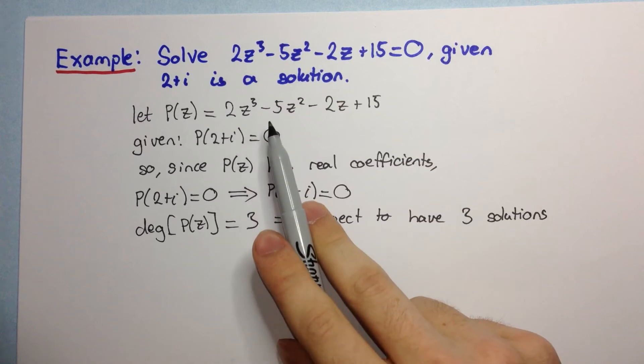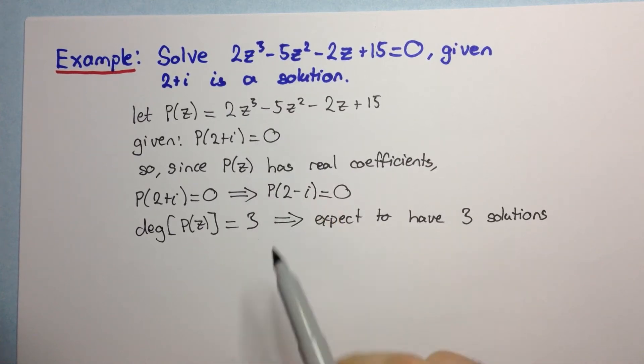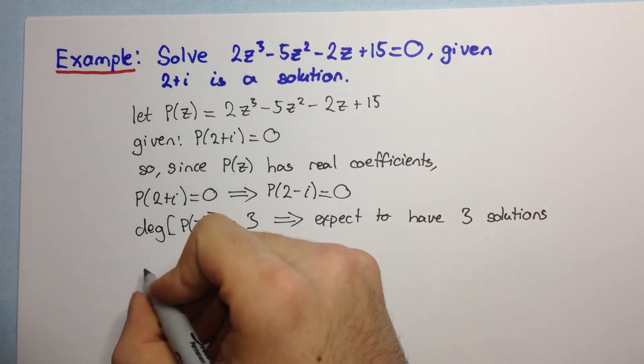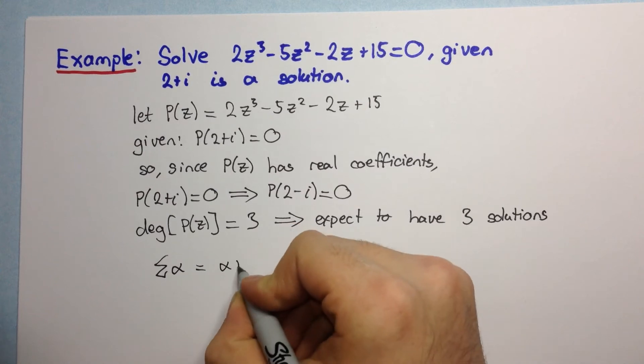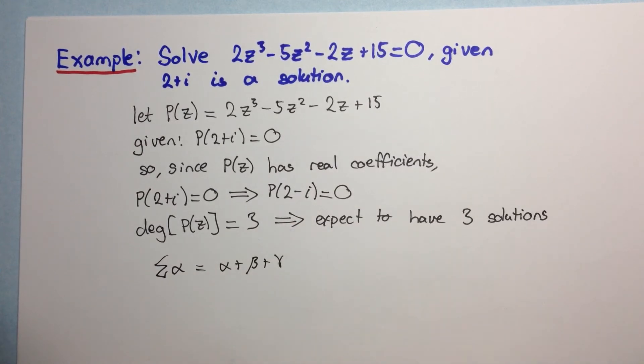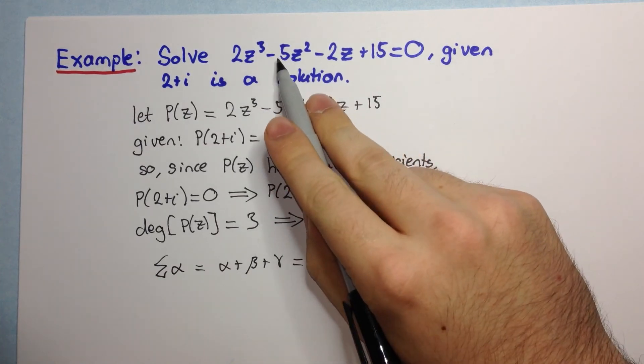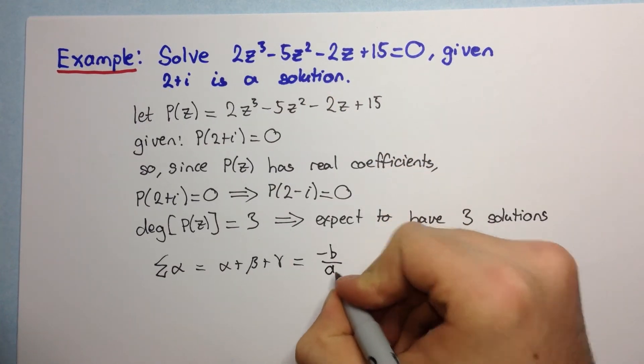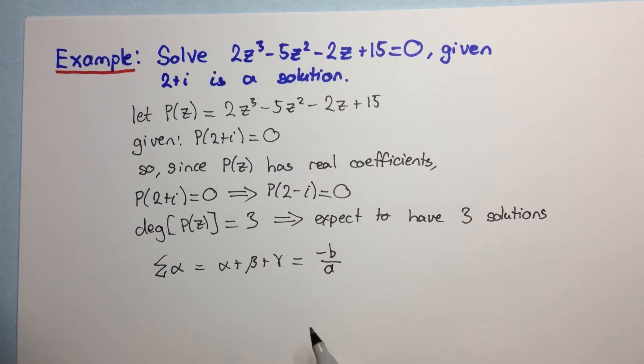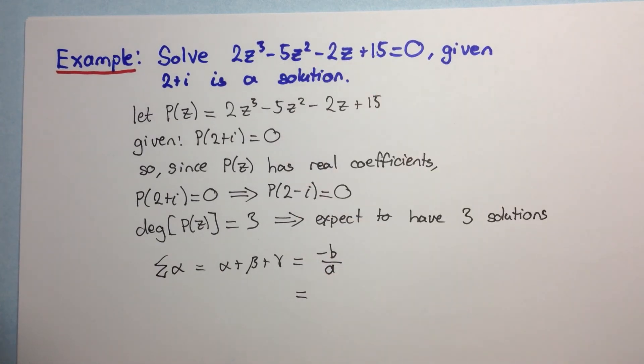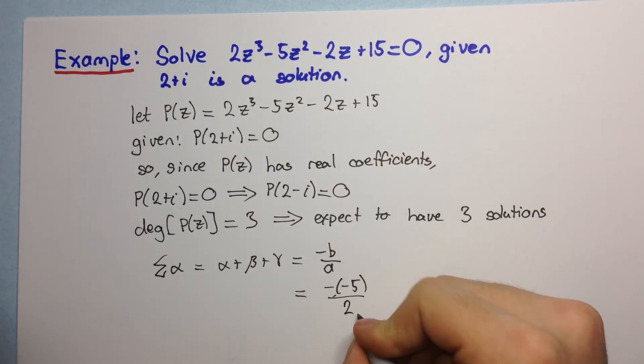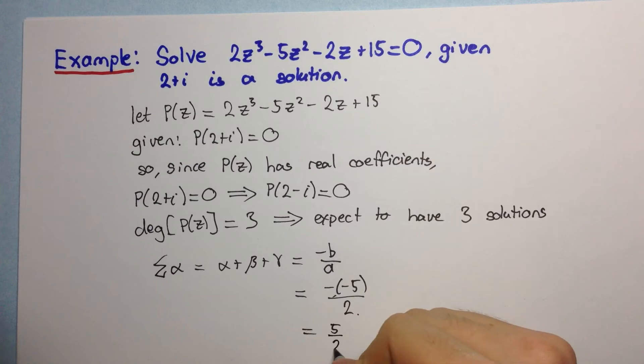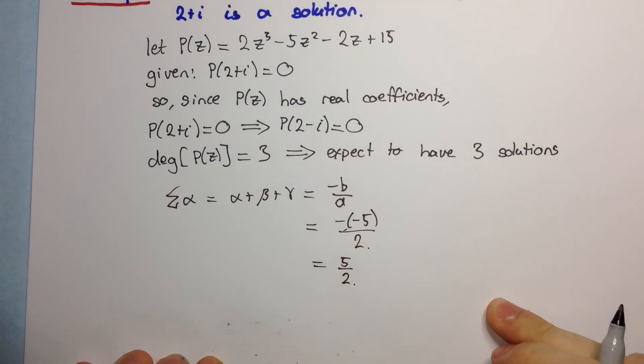Now, if you remember back to your three unit maths polynomials, you know that the sum of roots, which we denote like that, so this here in this case is alpha plus beta plus gamma, that's equal to minus b over a. In our case, b is minus 5. So, we have minus minus 5 divided by a which is 2.